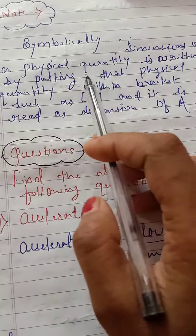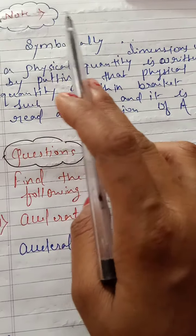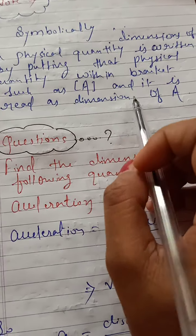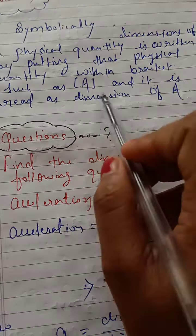An important note: dimension is generally denoted in square brackets. It is read as dimension of A, meaning the dimension of a physical quantity.